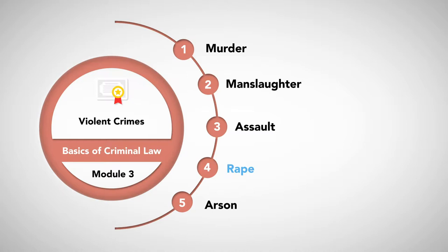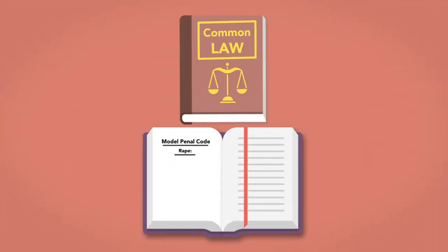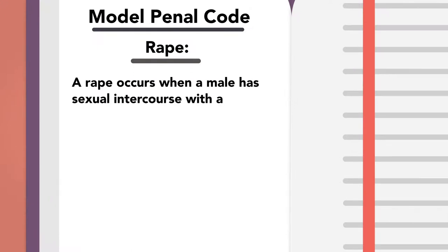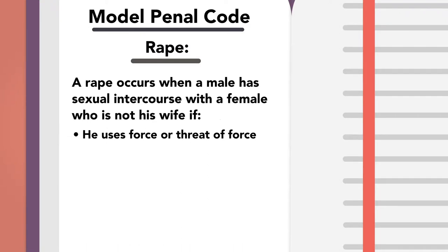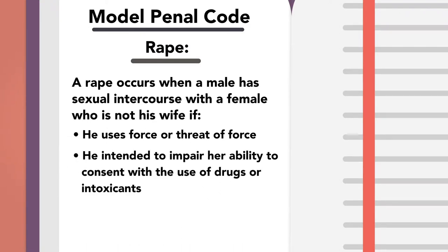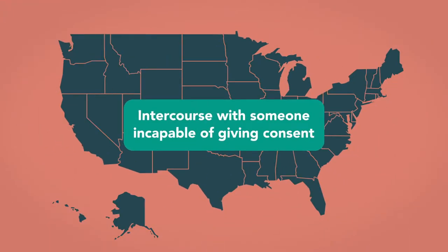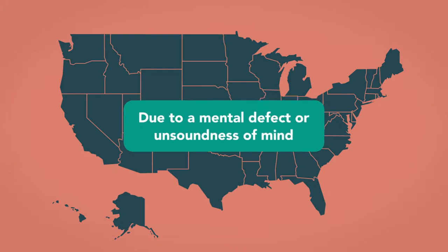Rape. Under the Model Penal Code, which typifies the common law rape definition, a rape occurs when a male has sexual intercourse with a female who is not his wife if: one, he uses force or the threat of force; two, he intended to impair her ability to consent with the use of drugs or intoxicants; three, she is unconscious; or four, she is less than ten years old. Many states also define rape as intercourse with someone incapable of giving consent due to a mental defect or unsoundness of mind.